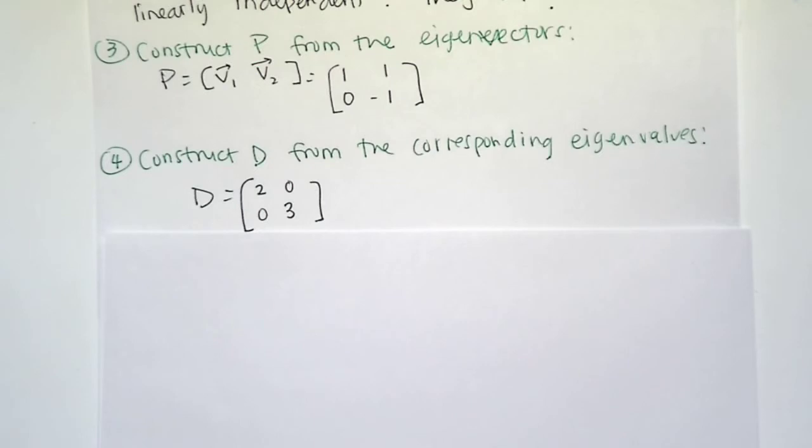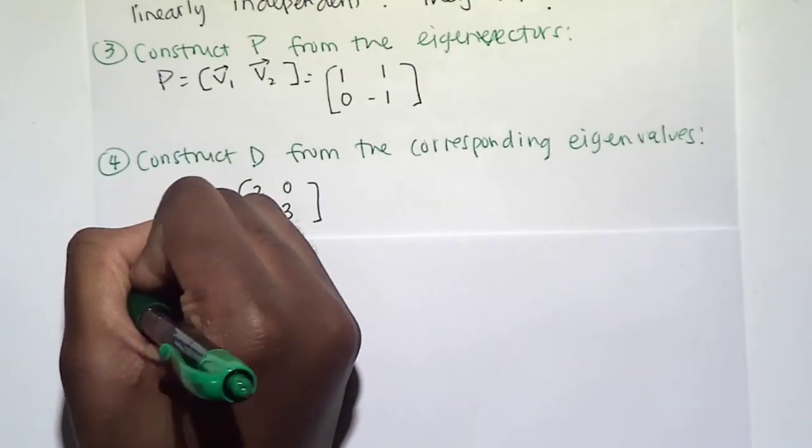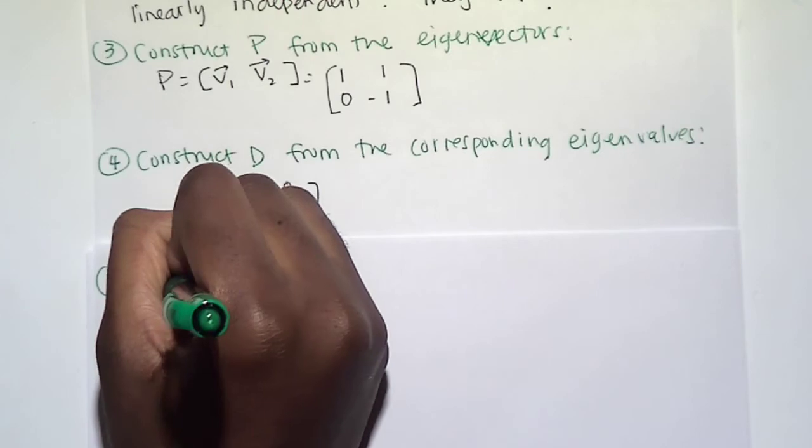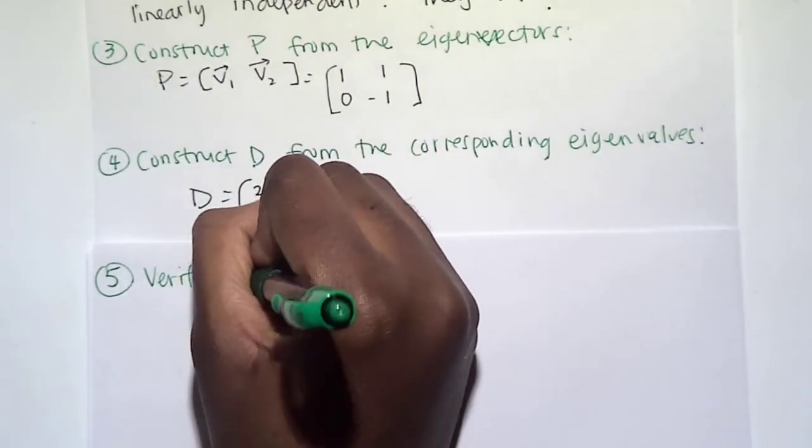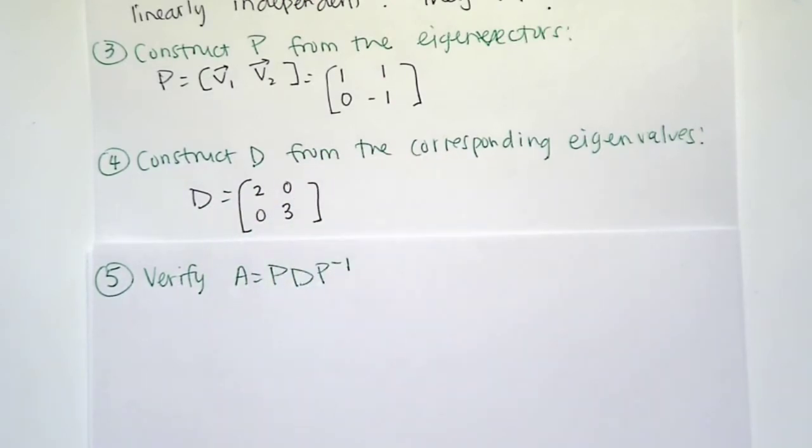And then the final step is just to verify that this is correct, that we did find the right diagonalization. So we have all the components. All right, so final step, we need to verify that A equals P, D, P inverse.